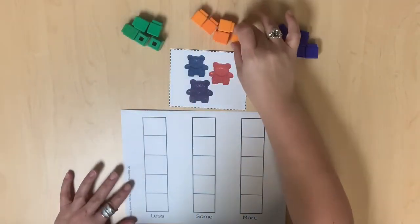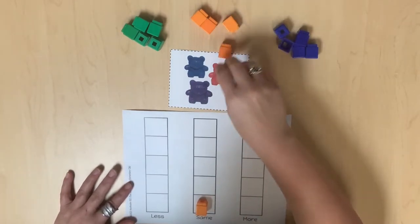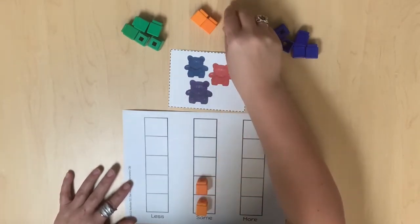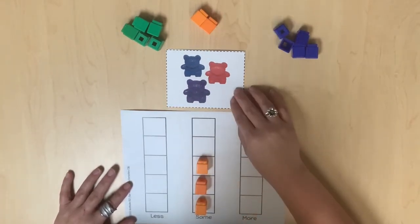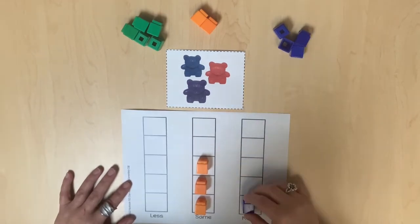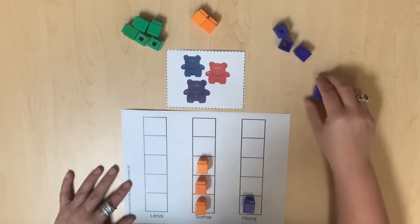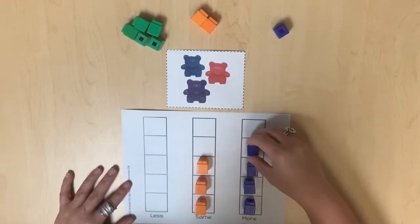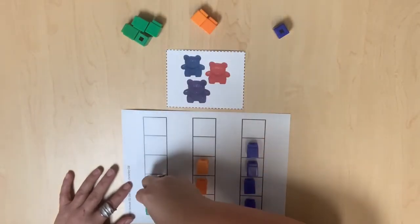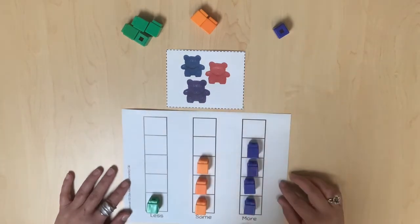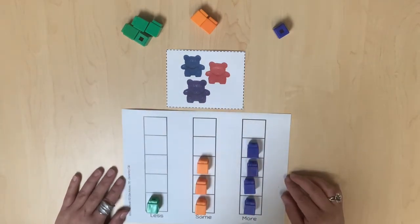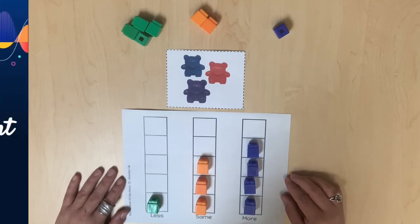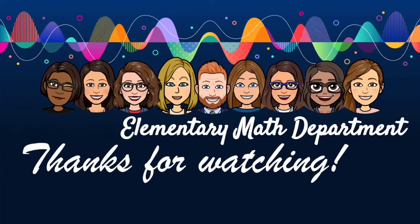Once students have an understanding of comparisons, they may use a pictorial representation to generate sets on five frames that are of equal value or the same as a given set, of greater value than a given set, and of lesser value than a given set. These sets may be generated horizontally or vertically.